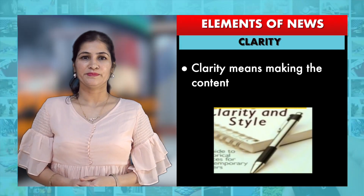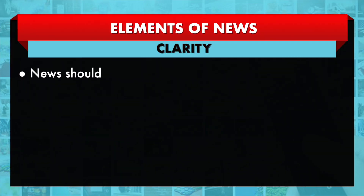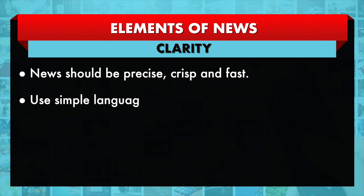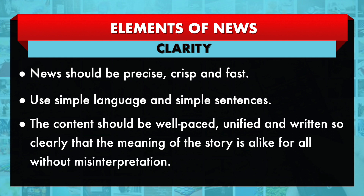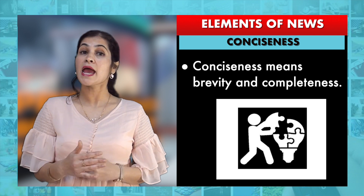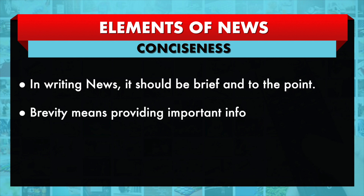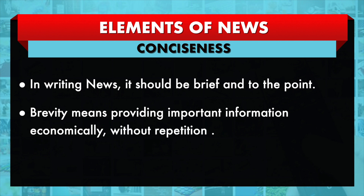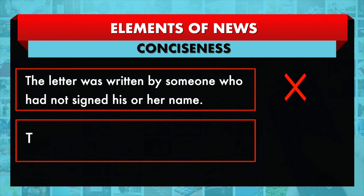The sixth element is clarity. Clarity means making the content easy to understand. News should be precise, crisp, and fast. Use simple language and simple sentences. The content should be well-paced, unified, and written so clearly that the meaning of the story is aligned for all without misinterpretation. The seventh element is conciseness. Conciseness means brevity and completeness in writing. News should be brief and to the point. For instance, instead of 'the letter was written by someone who had not signed his or her name,' simply say 'the letter was anonymous.'